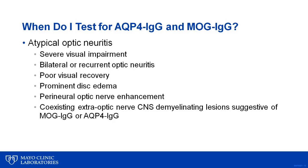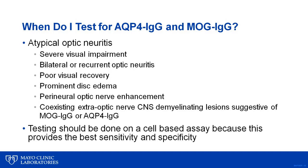It is also important to note that not all assays for these antibodies are equal. A false positive can be just as detrimental as a false negative because it can lead to an incorrect diagnosis and unnecessary treatments. These antibodies should all be run on cell-based assays, as done by the Mayo Clinic Neuroimmunology Lab, because this provides the best combination of sensitivity and specificity. For both aquaporin-4 and MOG, serum is more sensitive and specific than cerebrospinal fluid.